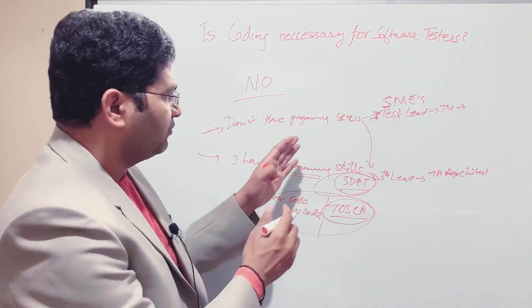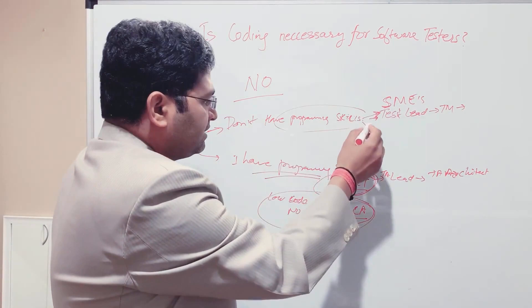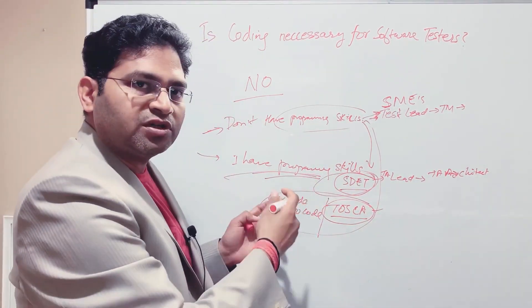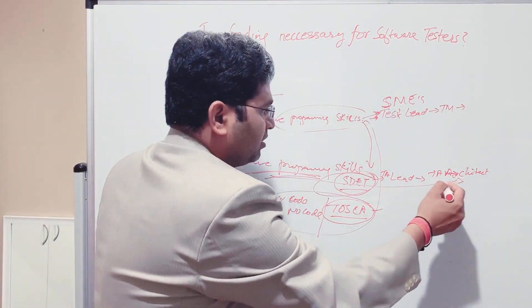I'll cover a separate video on this. But even if you are in this path, you can still be an automation person. Or if you love programming, go for Java, Python and take this particular path. If you are into programming, all these low-code or no-code tools will be a piece of cake for you.